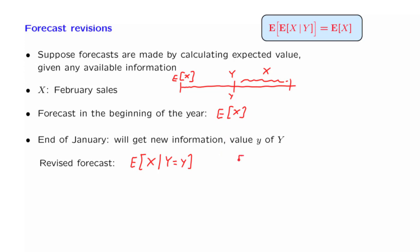My revised forecast is a random variable, the expected value of X, given Y, which will take this particular numerical value if it turns out that the random variable Y takes a specific value, little y.